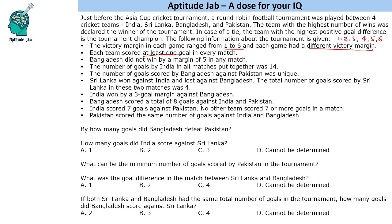Since it's a round-robin tournament with 4 teams, there will be 6 matches: India vs Sri Lanka, India vs Bangladesh, India vs Pakistan, Sri Lanka vs Bangladesh, Sri Lanka vs Pakistan, and Bangladesh vs Pakistan.